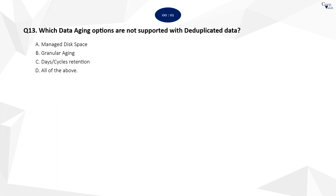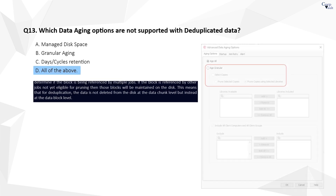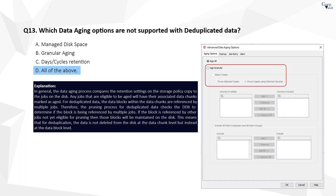Question 13. The correct answer is D. All of the options belong to normal data ageing operation and they are not applicable for deduplicated data. For deduplication, the data is not deleted from the disk at the data chunk level, but instead at the data block level, as the data blocks within the data chunks are referenced by multiple jobs.